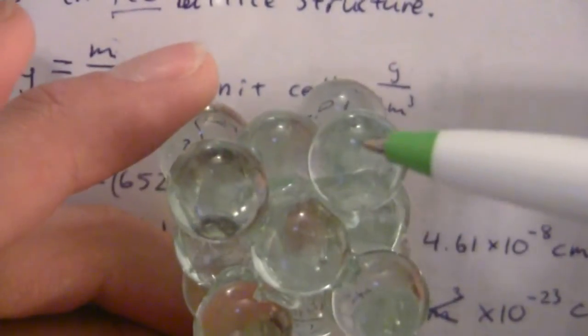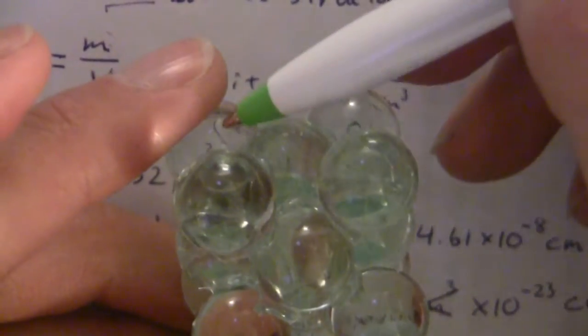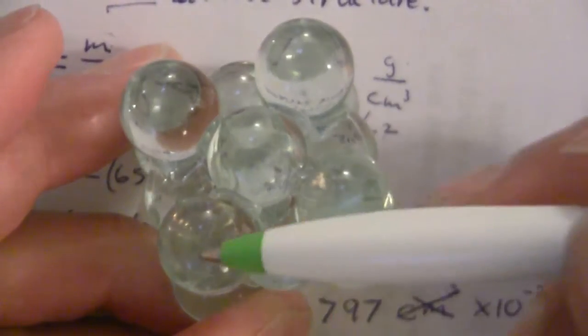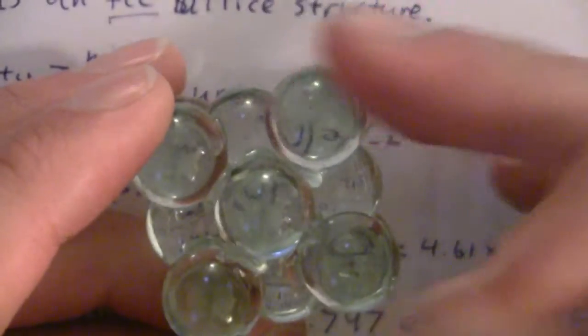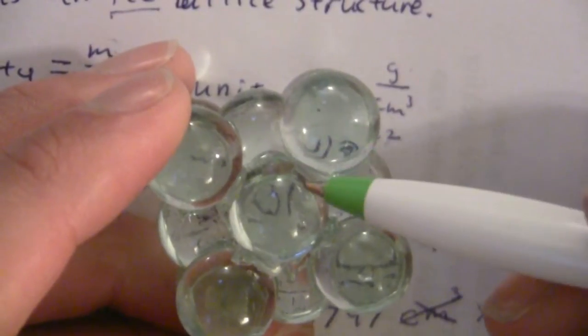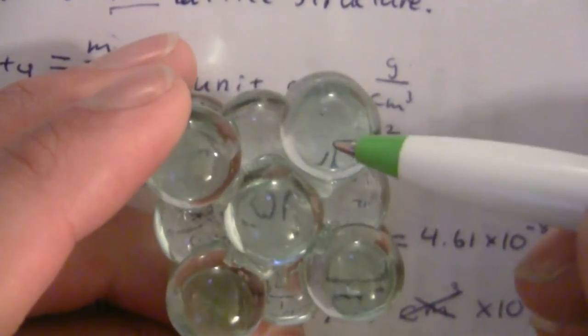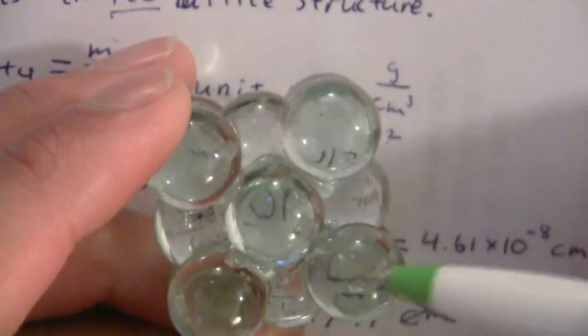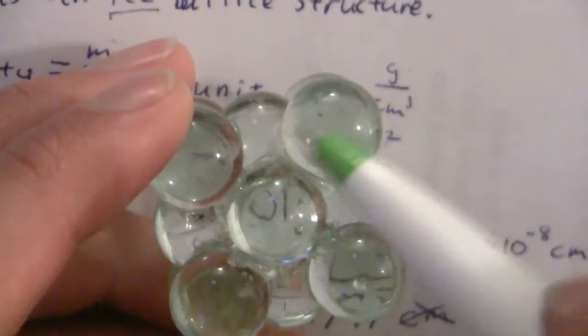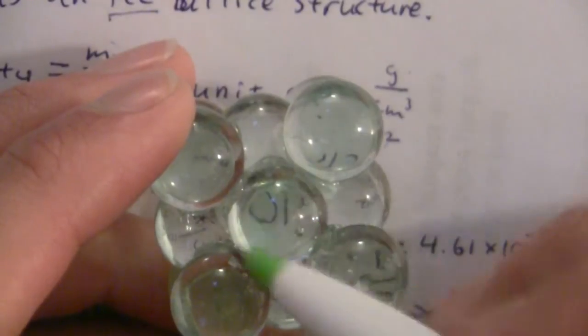But you look here, we have eight atoms on the lattice points of the cube, and each one of those will have one-eighth within the unit cell. So that's eight times one-eighth, eight corners times an eighth of an atom per corner, and then we have the faces.